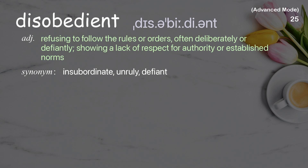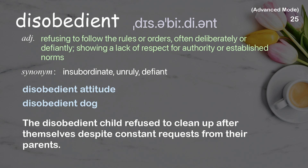Disobedient: refusing to follow the rules or orders, often deliberately or defiantly; showing a lack of respect for authority or established norms. Examples: disobedient attitude; disobedient dog. The disobedient child refused to clean up after themselves, despite constant requests from their parents.